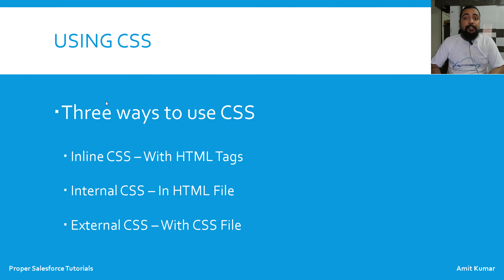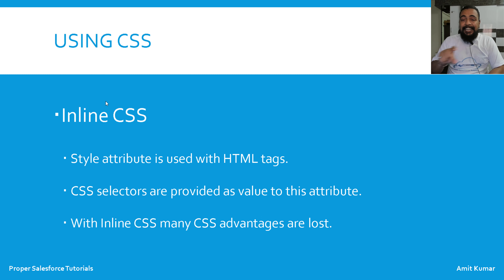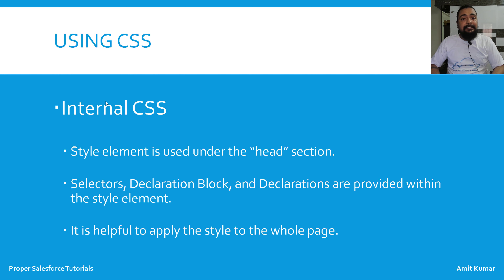There are three ways to use CSS: inline CSS, internal CSS, and external CSS. Inline CSS is a way of adding CSS to your HTML in which we provide the styling with each tag using the style attribute. CSS properties are provided as values to this attribute. With inline CSS, many of CSS's advantages are lost — for example, one specific style cannot be applied across multiple HTML pages.